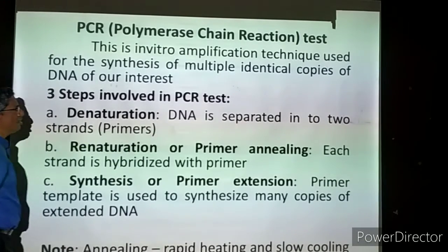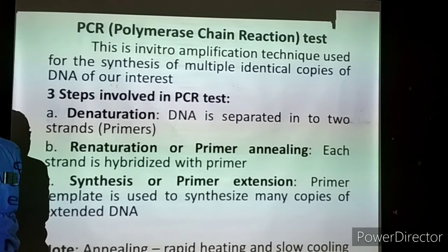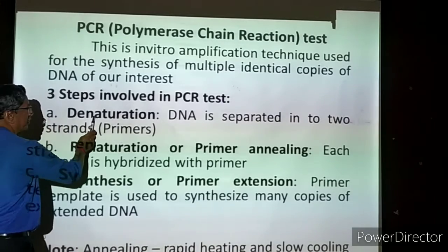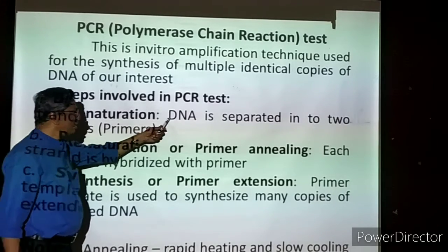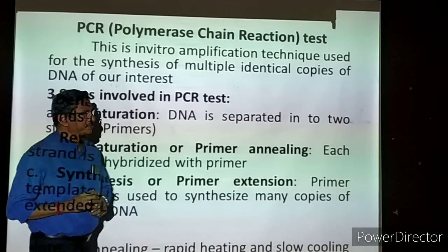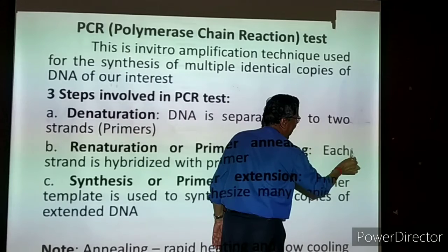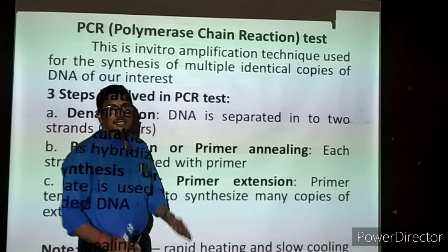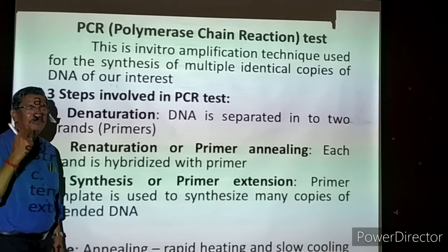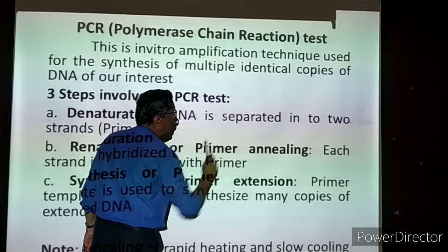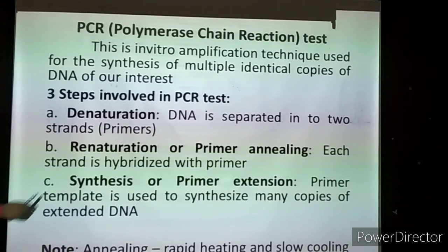Three steps are involved in the PCR test. The first step is called denaturation - the DNA is separated into two strands. In 11th standard, you might have studied that DNA is a ladder-like structure with two frames and a number of steps in between. Each frame is called one strand. So the two strands of DNA are separated, and each strand is called a primer. After denaturation, two primers are formed. The second step is re-naturation, also called primer annealing.